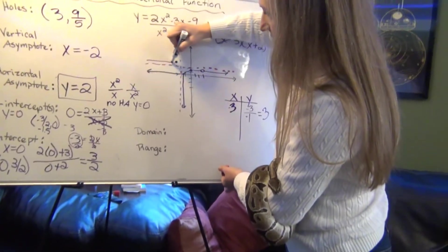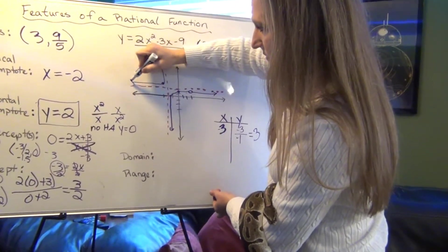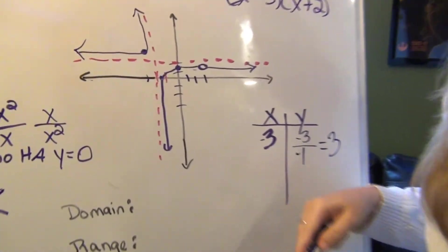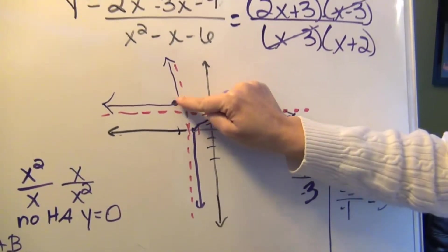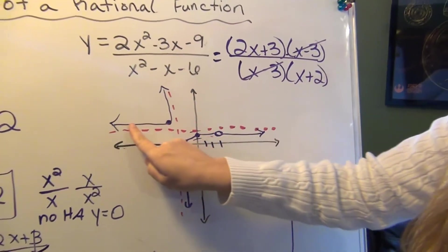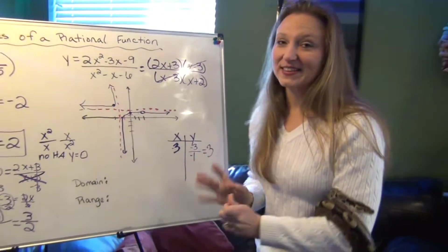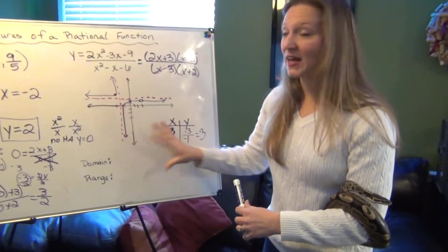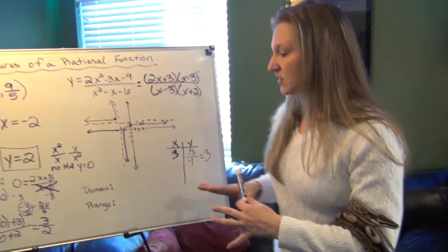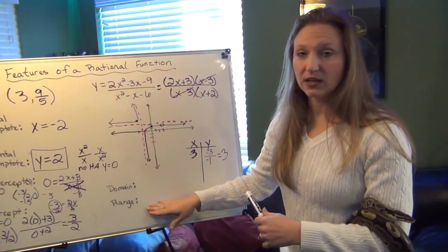So that tells us our function has a point at negative 3 and positive 3, which is about right here. So that tells us that we have a graph that is going to be in this part of the graph. We know it's going to get closer and closer to this asymptote and closer and closer to this asymptote as well. All right, the last thing we're going to talk about now that we have a good idea where the graph is, is we're going to talk about what the domain and range would be.